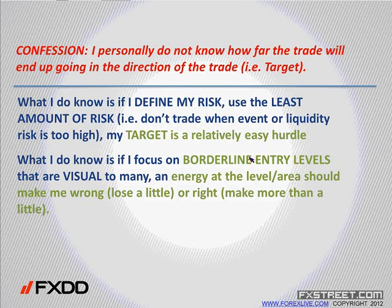If I focus on those levels using technical tools like moving averages, trend lines, and Fibonacci retracements, I'm able to understand that energy is likely to develop at that level — so either I'm going to be right or I'm going to be wrong. If I sell against a borderline level, I'm going to be right if the market goes lower, and I'm going to be wrong if the market goes above that level. I'd expect that if it goes above that borderline level, the market has energy to the upside; and if it goes below, there's energy to the downside.